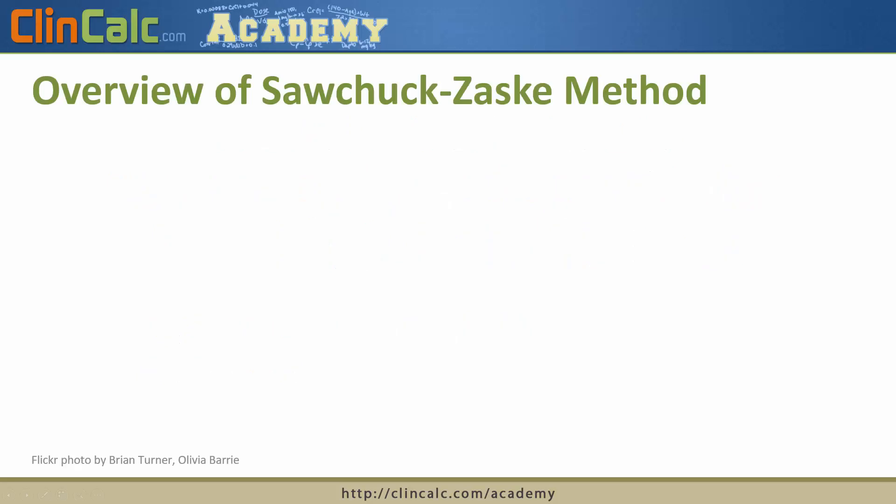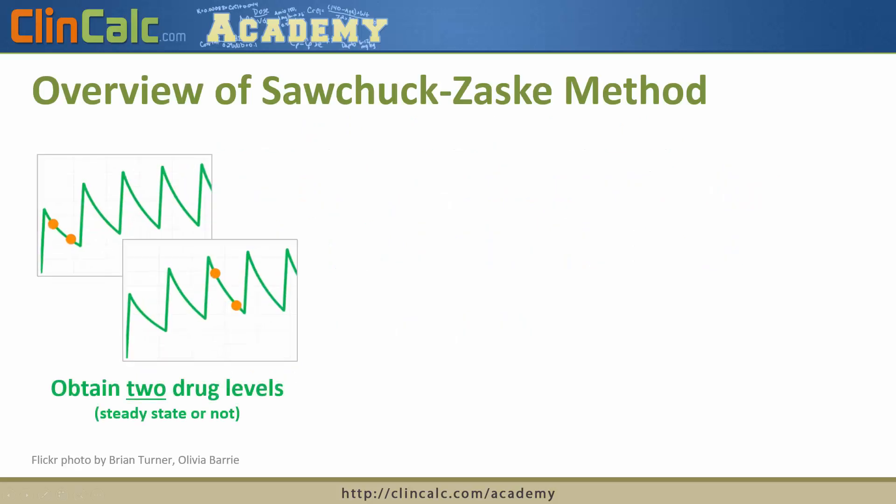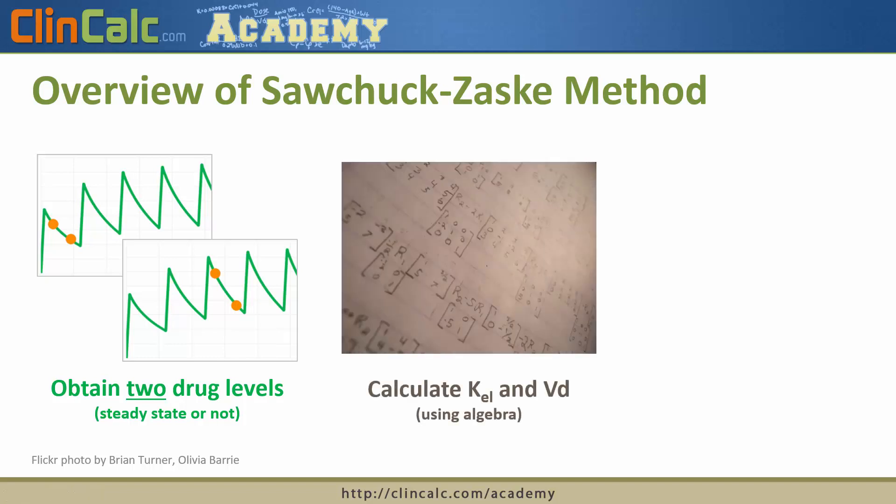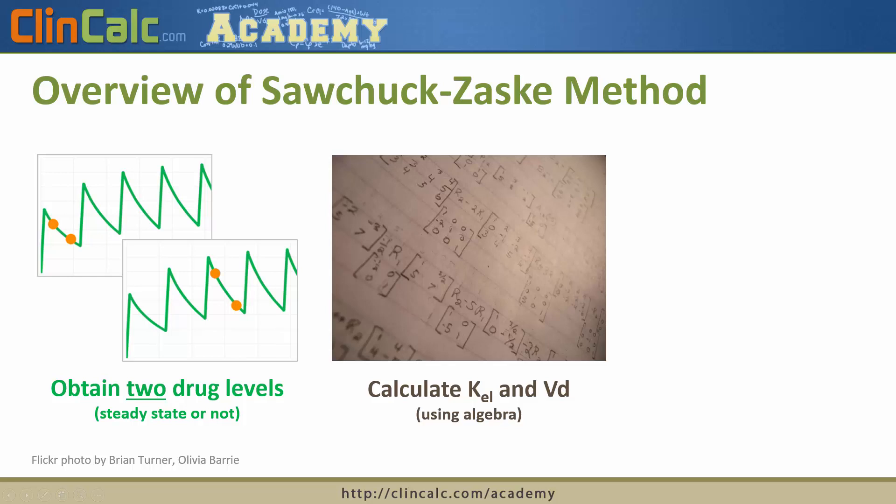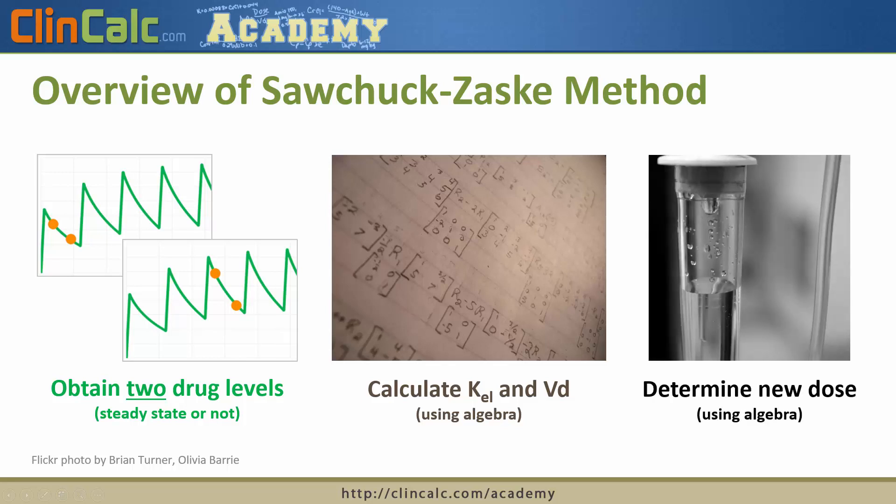At a high-level view, the Sawchuk-Zaski method involves obtaining two drug levels, whether you're at steady state or not does not matter, calculating a patient-specific elimination constant and volume of distribution using basic algebra, and then finally determining a new dose using algebra and the pharmacokinetic parameters that were calculated in the previous step.